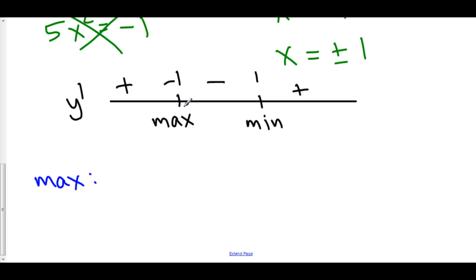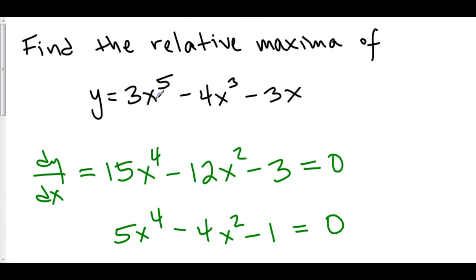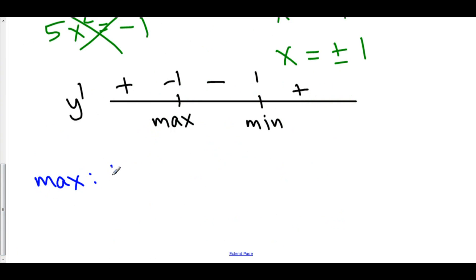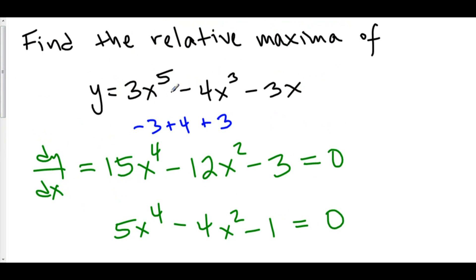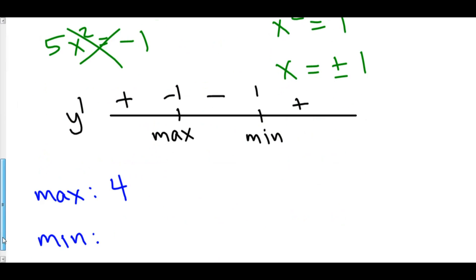To actually find what the max and min are, we need to plug in both negative 1 and 1. Plugging in negative 1: negative 1 to the fifth times 3 is negative 3; negative 1 cubed times negative 4 is positive 4; and negative 1 times negative 3 is positive 3 — so the value is 4. We have a relative max at x equals negative 1, and the relative maximum value is 4. Plugging in 1: 3 minus 4 is negative 1, minus 3 is negative 4. So we have a relative min at x equals 1, and the relative minimum value is negative 4.